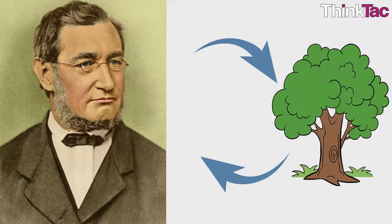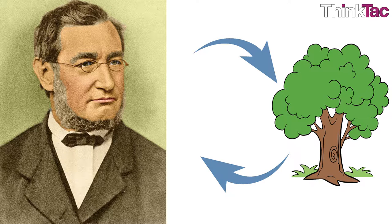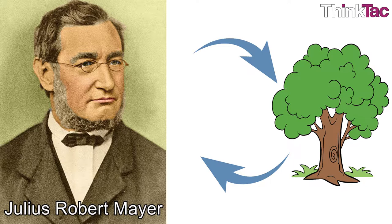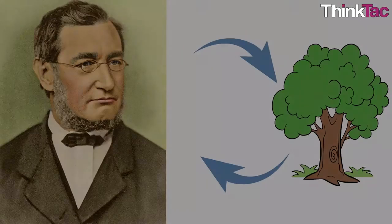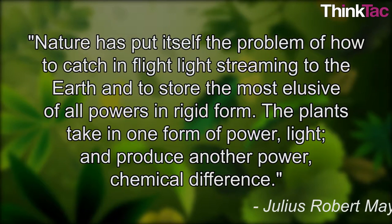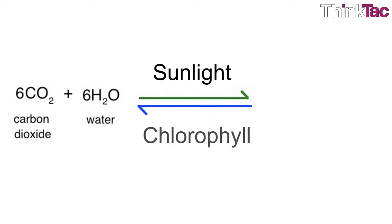The final contribution to the story came from a German surgeon, Julius Robert Mayer, who recognized that plants convert solar energy into chemical energy. He said, 'Nature has put itself the problem of how to catch in flight light streaming to the earth and to store the most elusive of all powers in rigid form. The plants take in one form of power, light, and produce another power, chemical difference.' The actual reaction takes place between carbon dioxide and water powered by sunlight to produce glucose and oxygen.